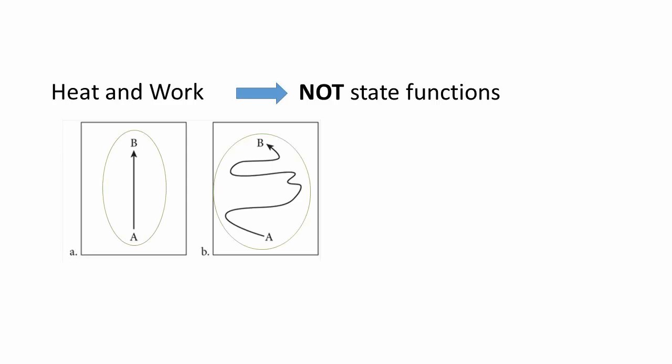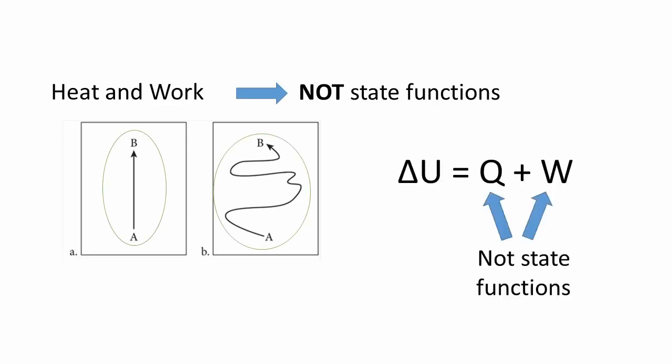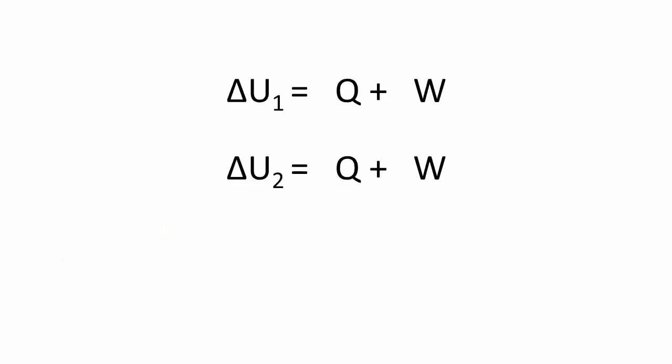But despite the fact that neither Q nor W is a state function, their sum — the internal energy change — is. What this means is that if one path increases the value of Q by an amount X, then the value of W must correspondingly decrease by this amount.